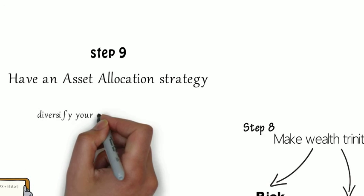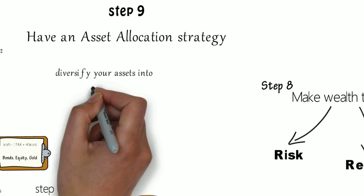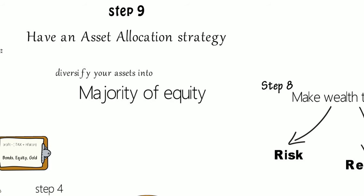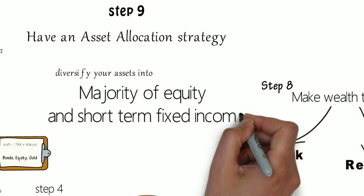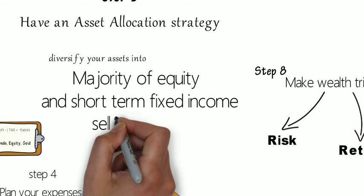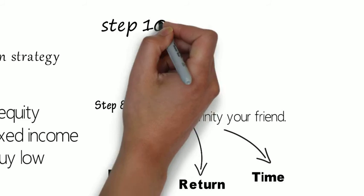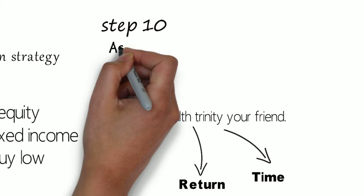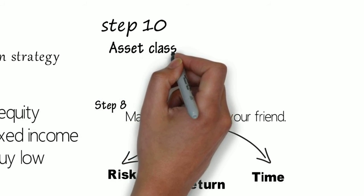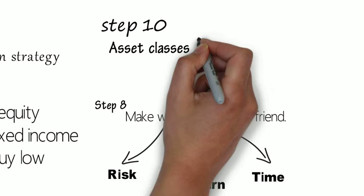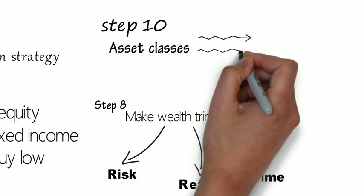Step number nine: Have an asset allocation strategy. Diversify majority of your portfolio into long-term equity and short-term fixed income. Always make sure to sell high and buy low.